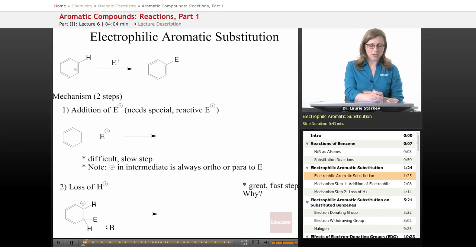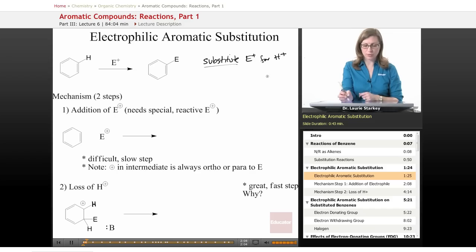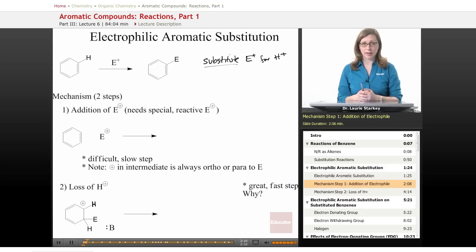But what happens is, we take a benzene ring, we react it with E plus, and we end up with an electrophile attached onto the ring. So again, it's a substitution reaction because we substitute an E plus for an H plus. So we remove a proton, and in its place we have an electrophile. Now, this is a two-step mechanism.